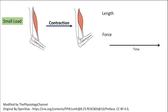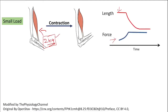Let's start with skeletal muscle. Consider a small load lifted by a skeletal muscle — say 2 kg lifted by the biceps. At the beginning of contraction, there is an increase in force but the muscle length is not shortening, because the initial force production is less than the load. Only when force production goes above the load does the muscle begin to shorten and the length decreases. This non-shortening phase is called the isometric phase, and once force reaches a plateau and shortening occurs, that is the isotonic phase.